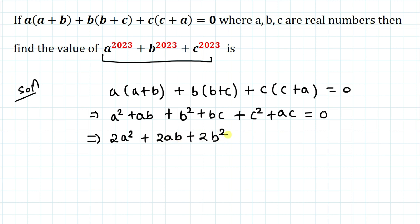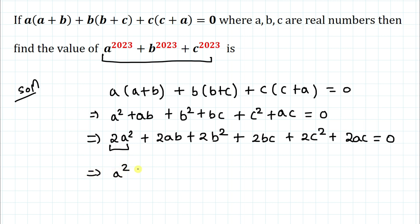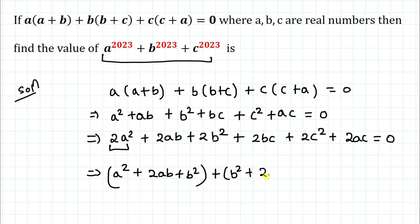So we have 2a² + 2ab + 2b² + 2bc + 2c² + 2ac = 0. I can rewrite this by grouping: taking a² + 2ab + b² as one group, then b² + 2bc as another group, along with a remaining c² term.